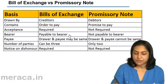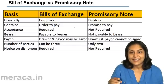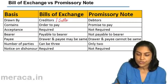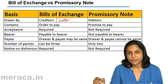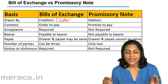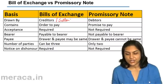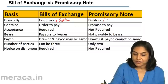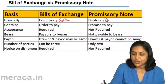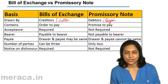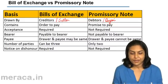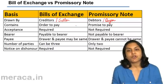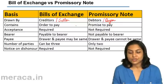A bill of exchange first and foremost is drawn by the creditor, by the person who has sold the goods. When X sold goods to Y, it was X who made the bill of exchange. But a promissory note would be made by Y himself, by the debtor, by the person who bought the goods, by the buyer. A bill of exchange contains an order to pay, while a promissory note contains a promise to pay.